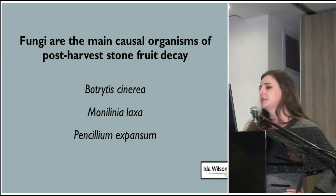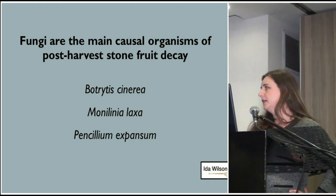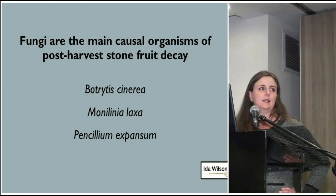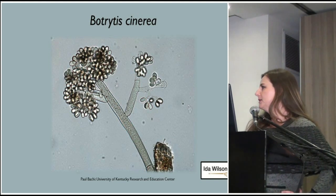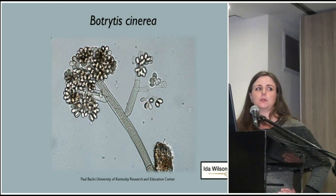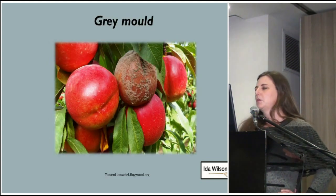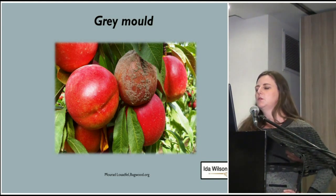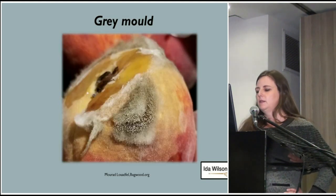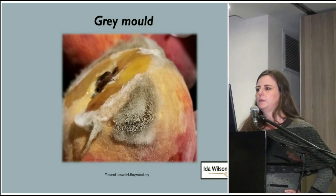Fungi are the main causal organisms of post-harvest stone fruit decay. There are three important fungi: Botrytis cinerea, Monolinia laxa, and Penicillium expansum. Botrytis cinerea — we also saw this micrograph in Dr. Julia's talk. This is what it looks like under the microscope, and it causes grey mould. You can see the typically grey-coloured spores forming on the fruit. This is a very nice photograph of the grey and homogenous spores that you'll see forming on the stone fruit.